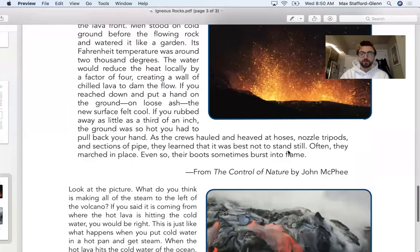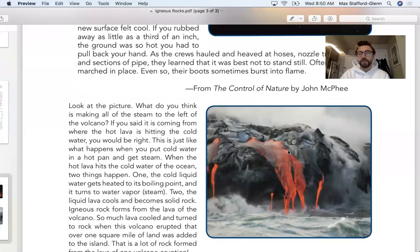So igneous rocks form when other rocks get really, really, really, really hot and melt, and then they cool down in different forms. And that forms an igneous rock. And then we have our second part of the rock cycle.